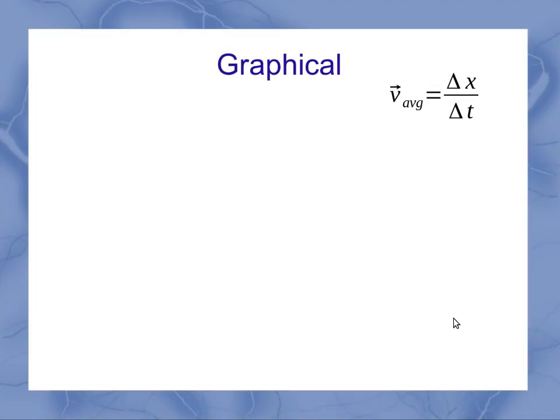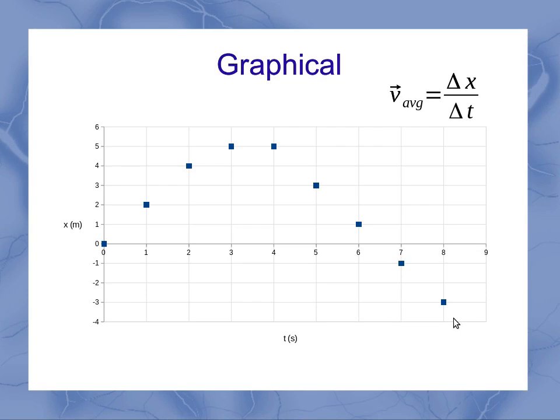Now we can also look at this graphically. If I've got a series of positions and times, I can find the average velocity between any two points on this graph. So let's say, for example, I wanted to look at one second and four seconds. I've got two points here on the graph which represent one second and four seconds. From the graph, I can determine both the time span, three seconds, and the displacement. In this case, I went from two meters up to five meters, so that's a displacement of three.